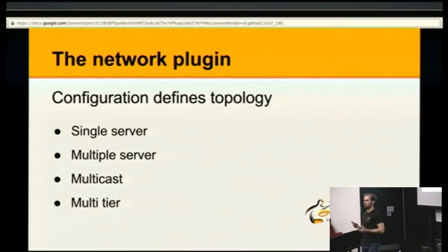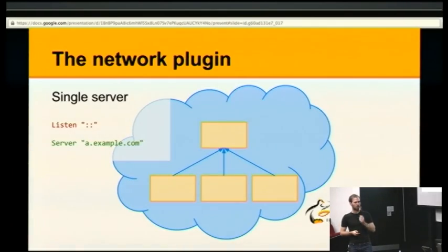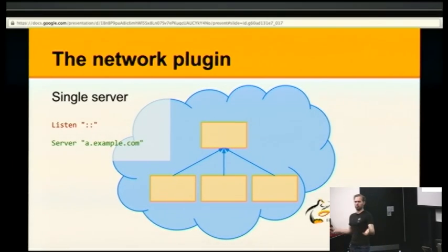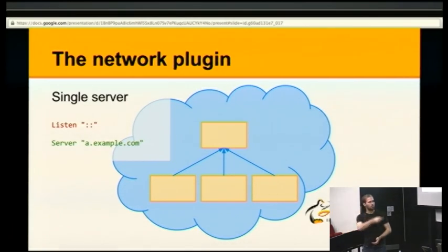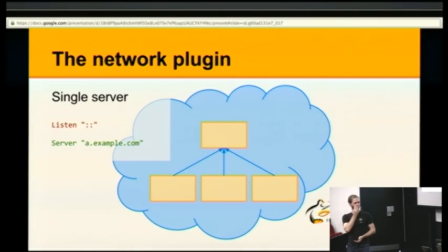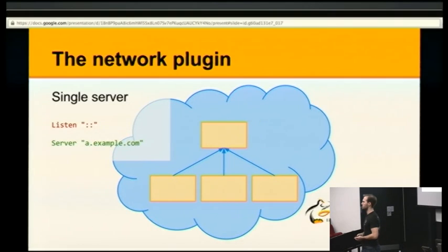With these different ways of configuring the network plugin, you can build several types of networks. The simplest is just having all your machines send metrics to one server — the config for the server is 'listen' on the any address, and the config for the three clients is 'server a.example.com', and you get roughly this setup.